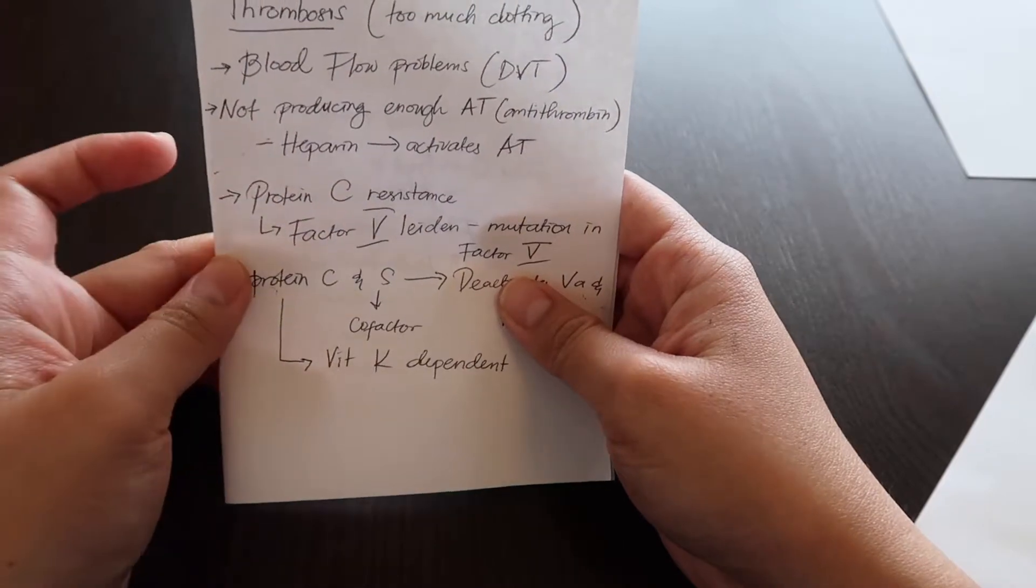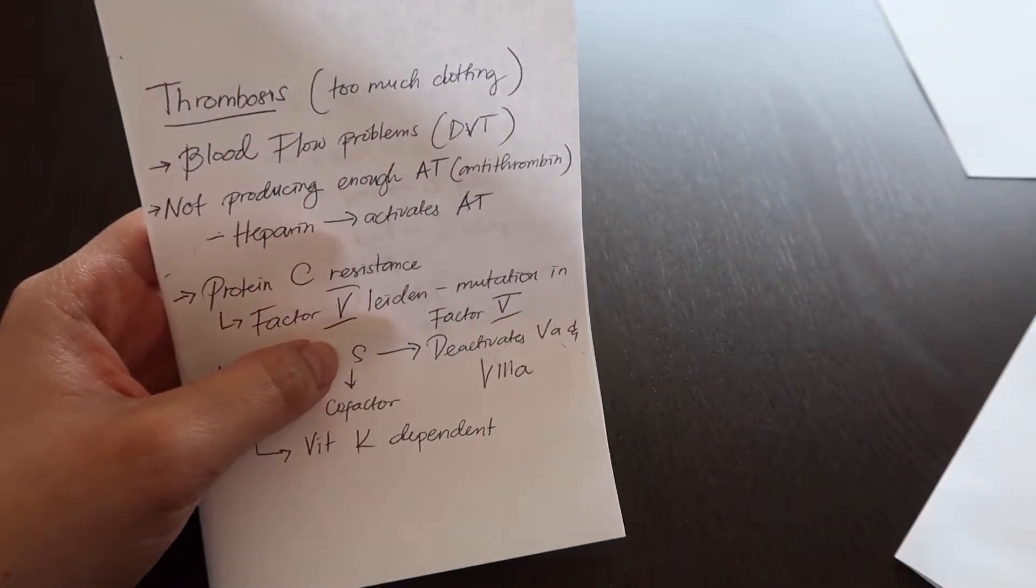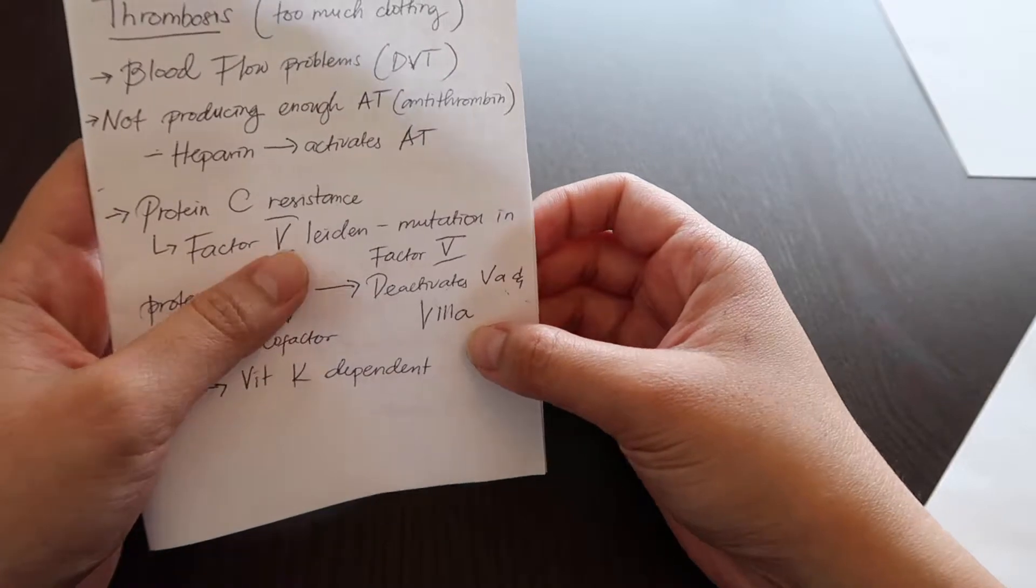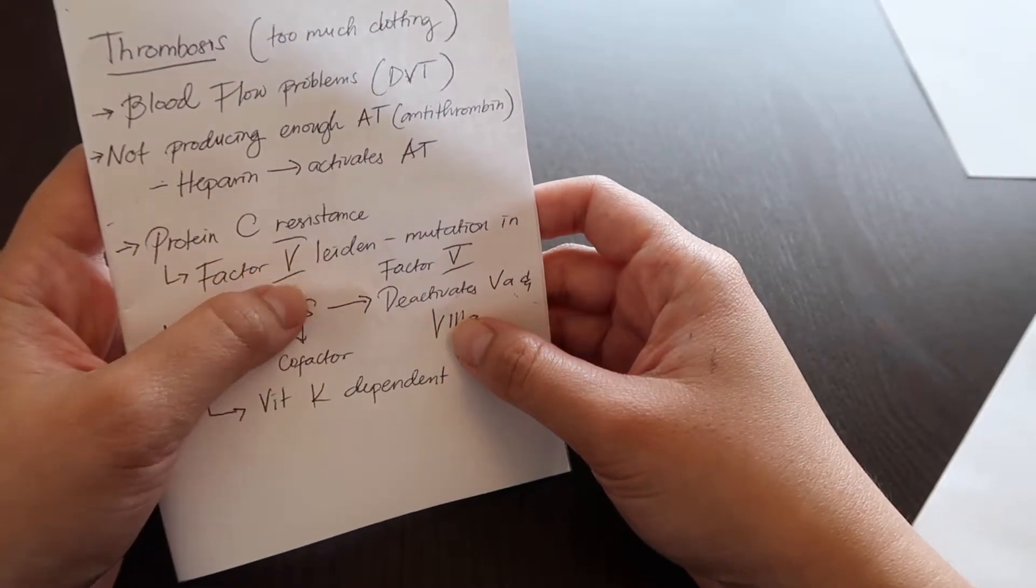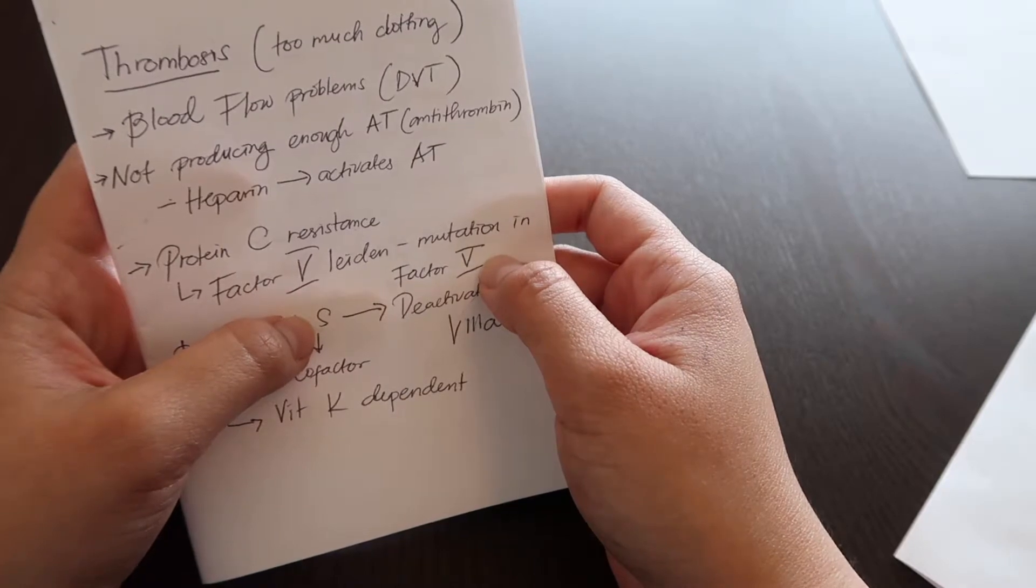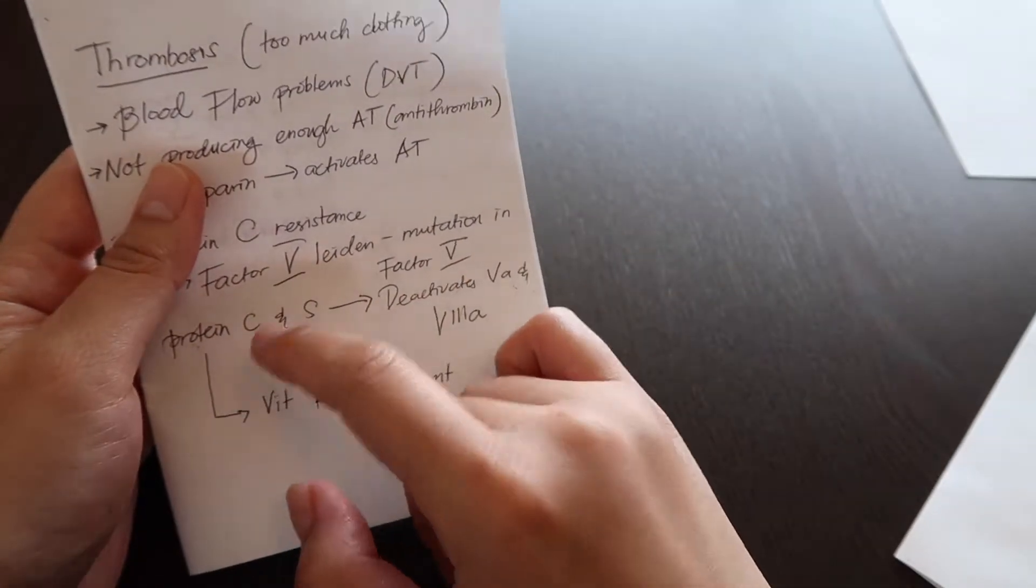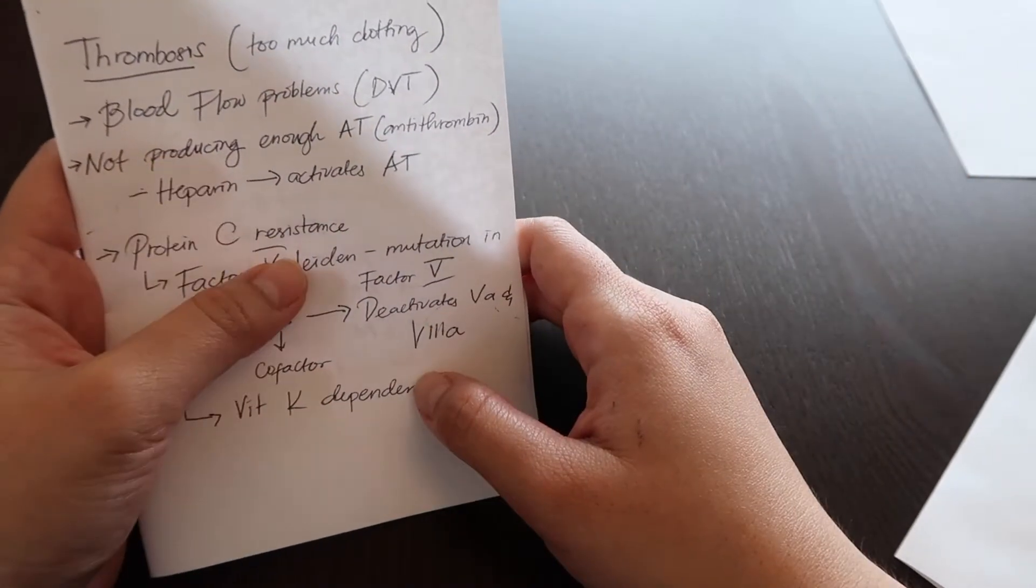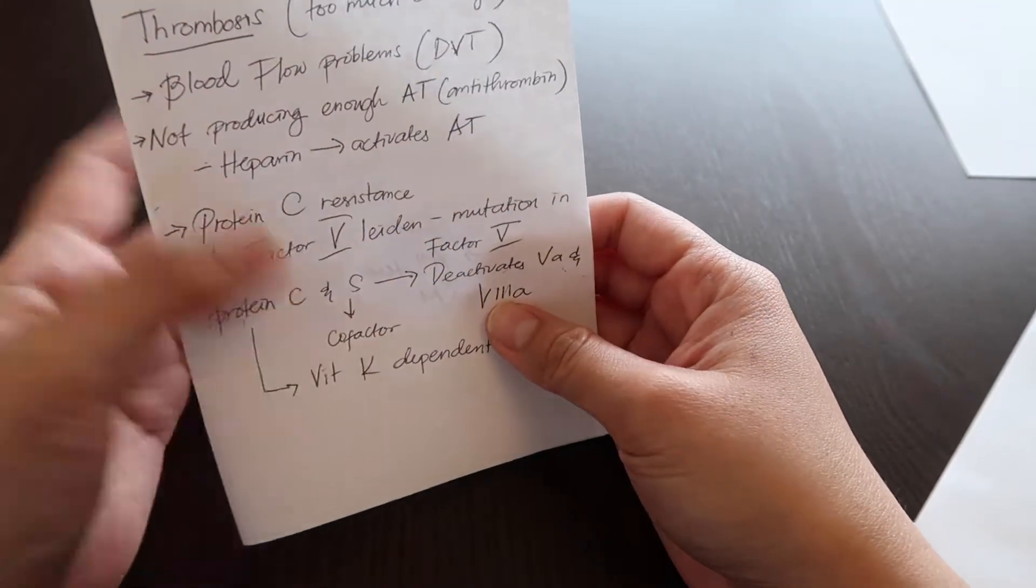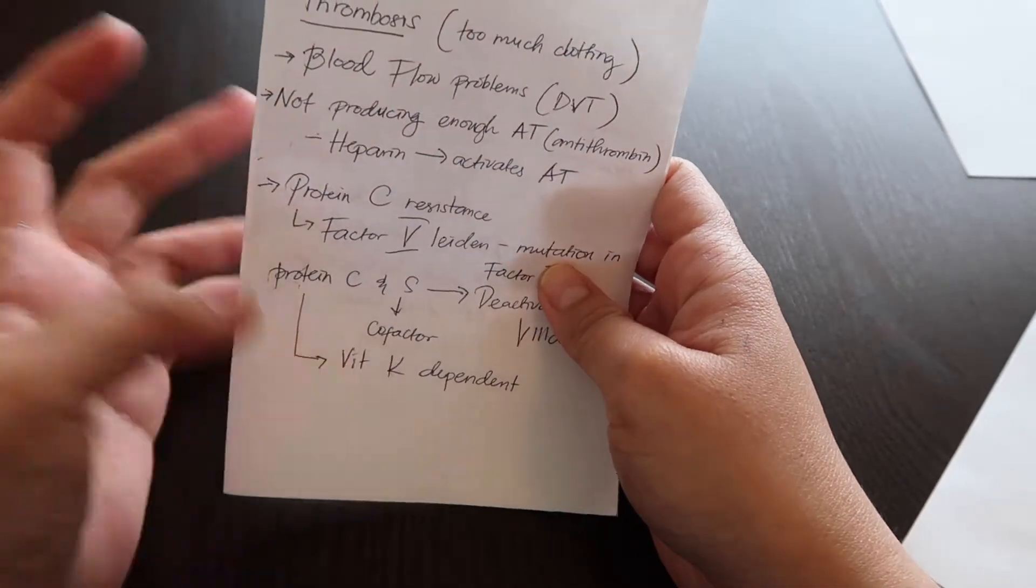Last but not least we have protein C resistance. Protein C functions with protein S to deactivate factor 5a and factor 8a. But unfortunately with protein C resistance, also known as factor 5 Leiden, there is a mutation in your factor 5. That mutation makes it so that factor 5 now is immune to the activation of protein C. So it doesn't care for it anymore. It's just immune, it's just going to keep going, it's going to be activated forever. So there's too much factor 5a and you have a problem. You have too much clotting going on. Also, protein C and S are vitamin K dependent, so they do get affected by warfarin.